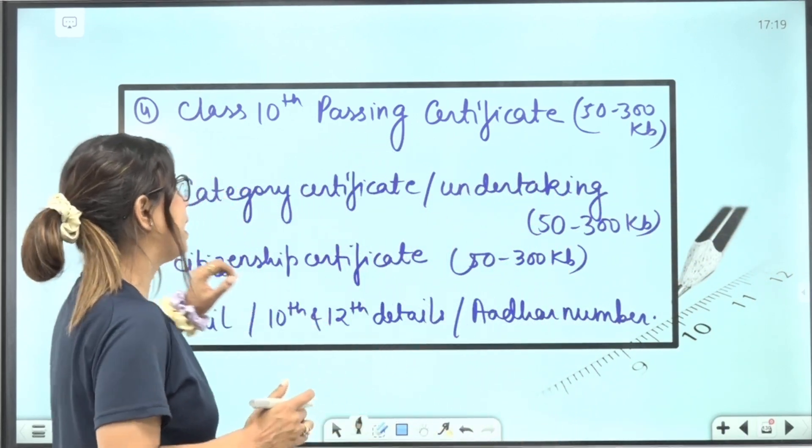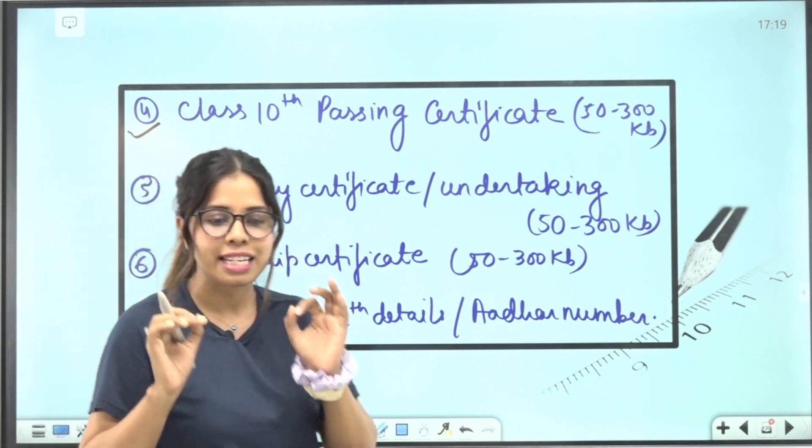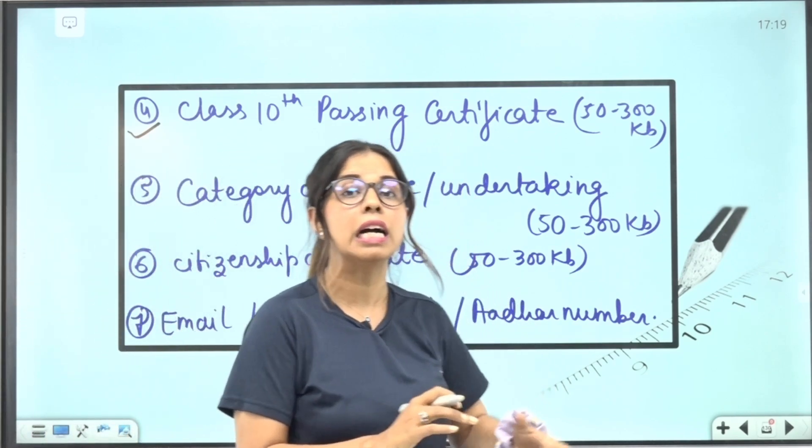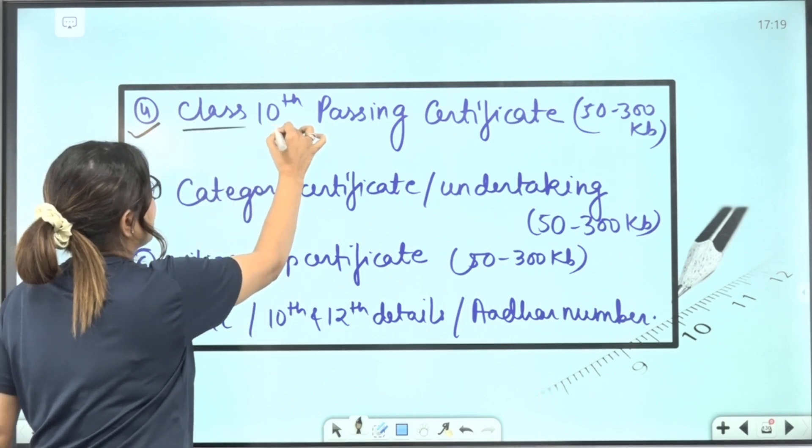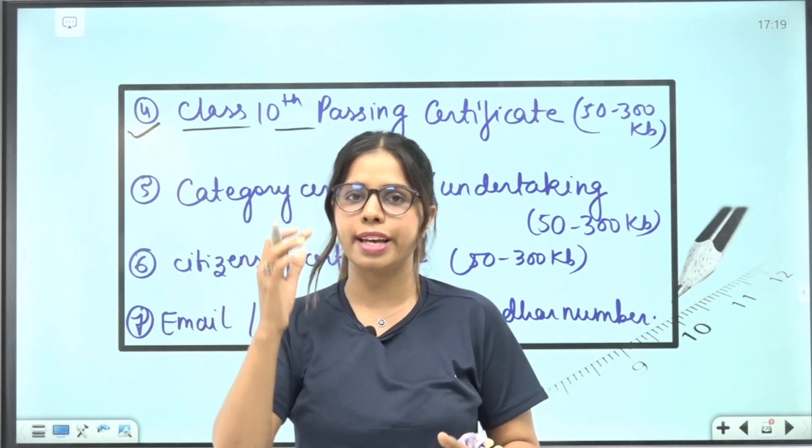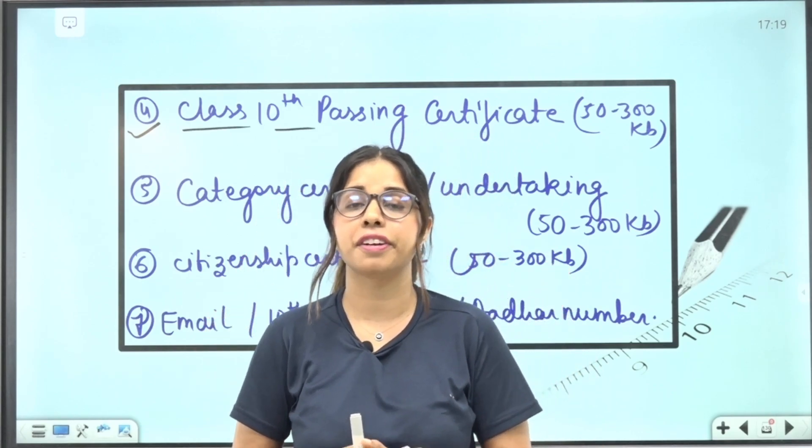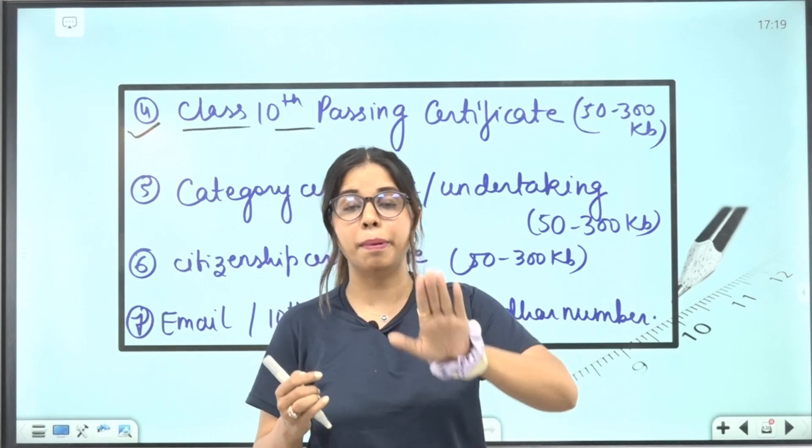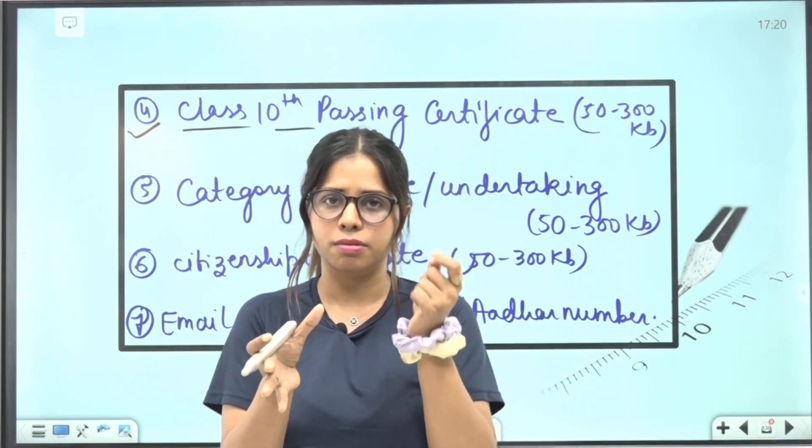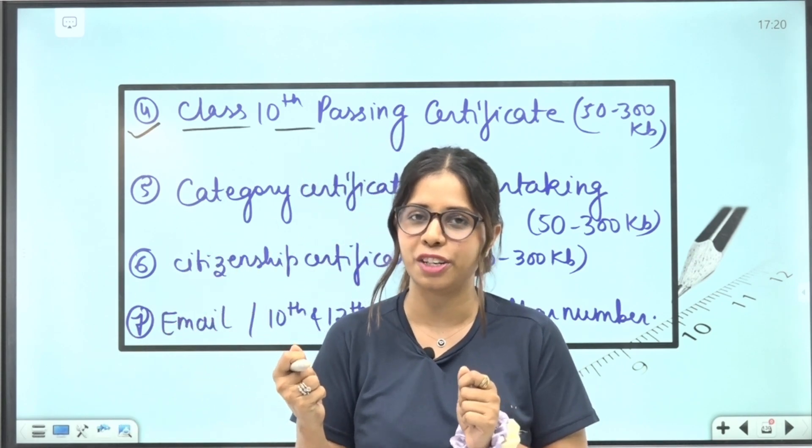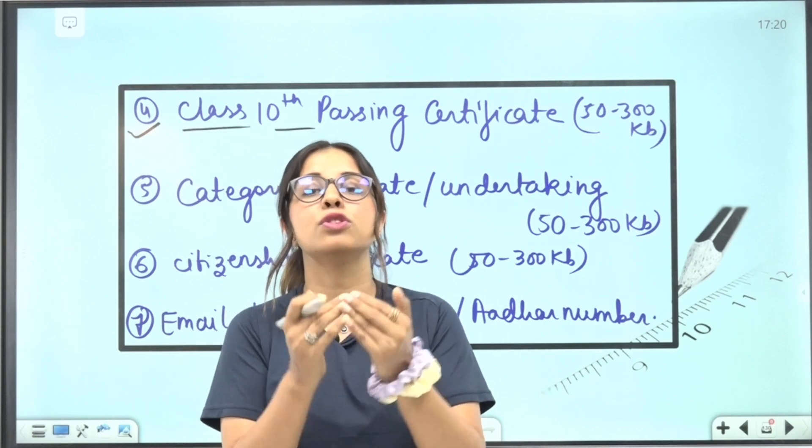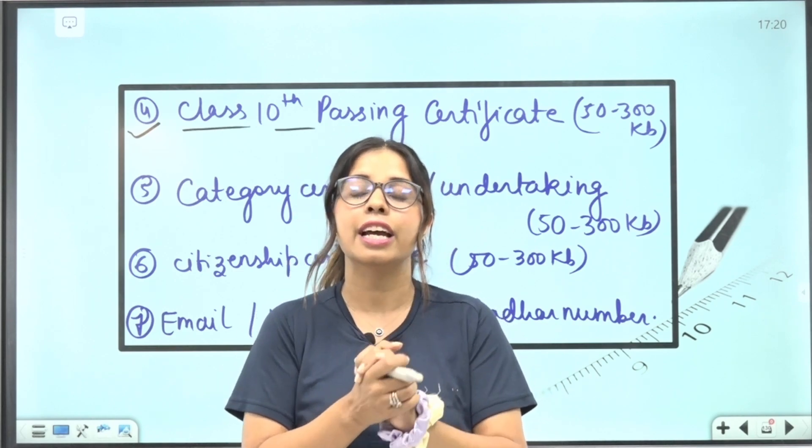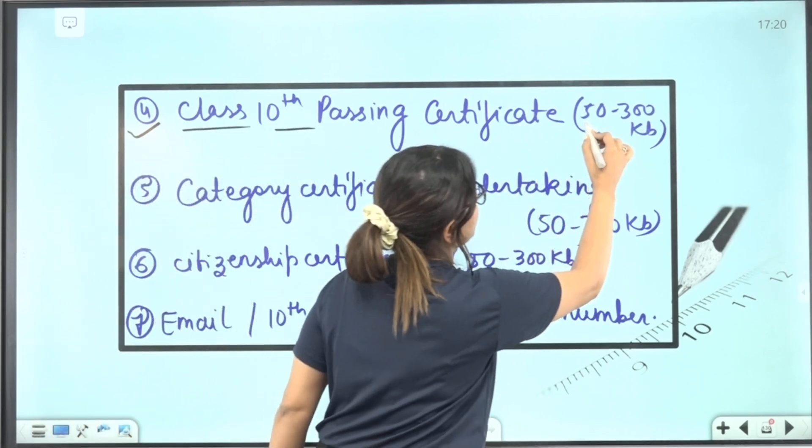After that we come to the fourth important document, again very important. Class 10th passing certificate ready. Now see what happens, sometimes you have to take a certificate from school, you have to take a result certificate and a passing certificate. Mostly you have to give a passing certificate apart from the result paper. You have to take a passing certificate. If it does not have it or you have not been provided in the school, then go for your passing certificate which is inside your result itself. So you have to take a passing certificate, 50 to 300 KB.